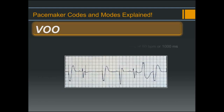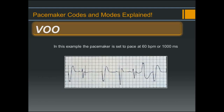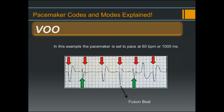In this example, the pacemaker is set to pace in VOO at 60 beats per minute, or every 1000 milliseconds. Here we see a pacing pulse that captures the heart, giving us a wide QRS morphology. Next we see an intrinsic QRS — since the pacemaker's sensing is turned off, it is unable to sense this intrinsic event and therefore paces again 1000 milliseconds after the first pacing pulse. It will continue to pace every 1000 milliseconds with total disregard for what the heart's intrinsic rate is.